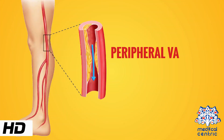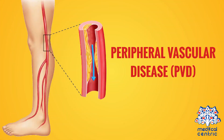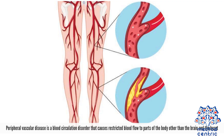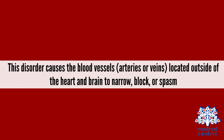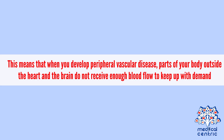Today's topic is peripheral vascular disease, or PVD. Peripheral vascular disease is a blood circulation disorder that causes restricted blood flow to parts of the body other than the brain and the heart. This disorder causes the blood vessels — the arteries or veins — located outside of the heart and brain to narrow, block, or spasm. This means that parts of your body outside the heart and brain do not receive enough blood flow to keep up with demand.